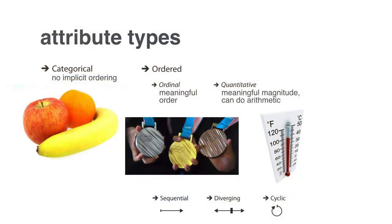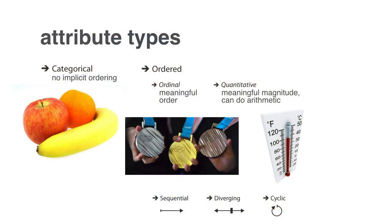When we think about attributes, the first kind would be categorical - these are attributes that have no implicit ordering, things like apples, oranges, bananas. Then we have the class of ordered. We have ordinal, where you have some sort of meaningful order, such as bronze, silver, and gold. And then we have quantitative, where not only is it ordered, but we have a meaningful magnitude and we can do arithmetic on it - such as temperature or height. This categorization is really vital to how we end up choosing the kinds of visual encoding channels we're going to use for our visualization. When we talk about ordinal and quantitative data, we can also talk about whether the ordering is sequential, diverging, or cyclic.